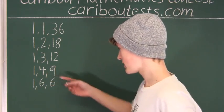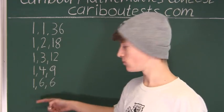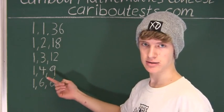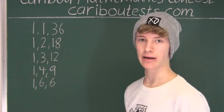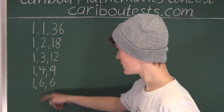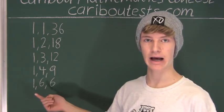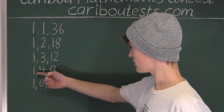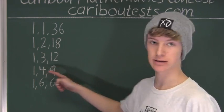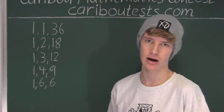Now, the next biggest factor of 36 would be 9. But 36 divided by 9 is 4. Then we would be writing 1, 9, and 4. But we already have that combination of ages here: 1, 4, 9, since the order of the ages does not matter.